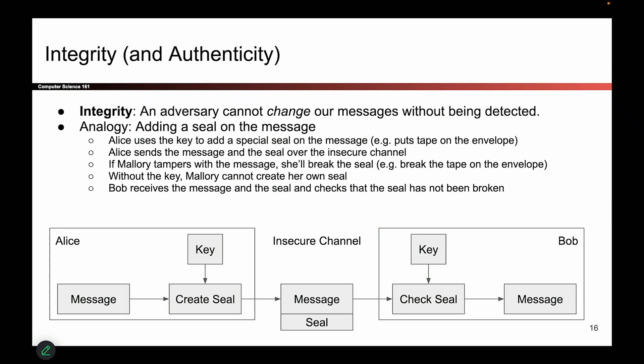Now let's cover the second definition — integrity, and the related property of authenticity. The adversary cannot change what the message says without being detected. Using a physical analogy, Alice takes her message and her secret key and generates a seal that only she could have generated. It has Alice's special signature — nobody else can create it. When Alice sends the message, it includes both the message and the seal.